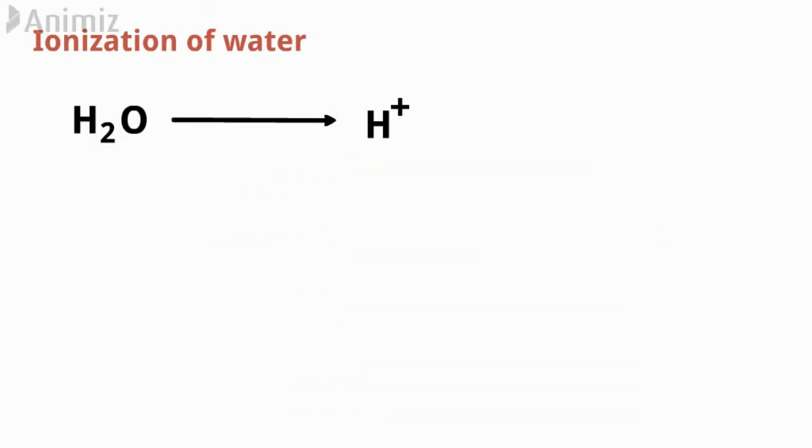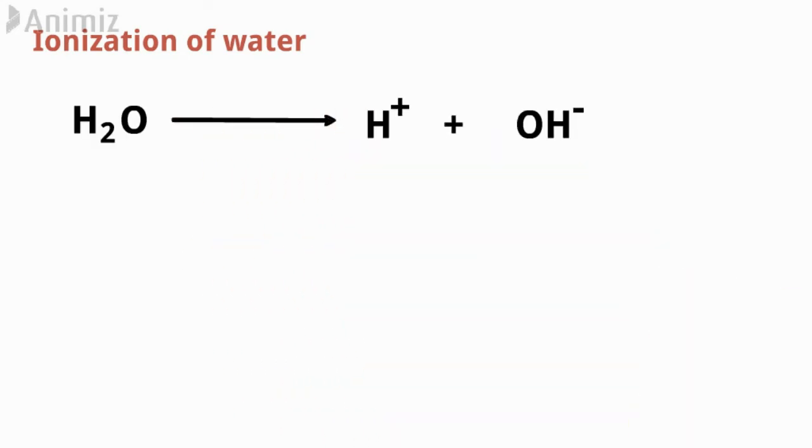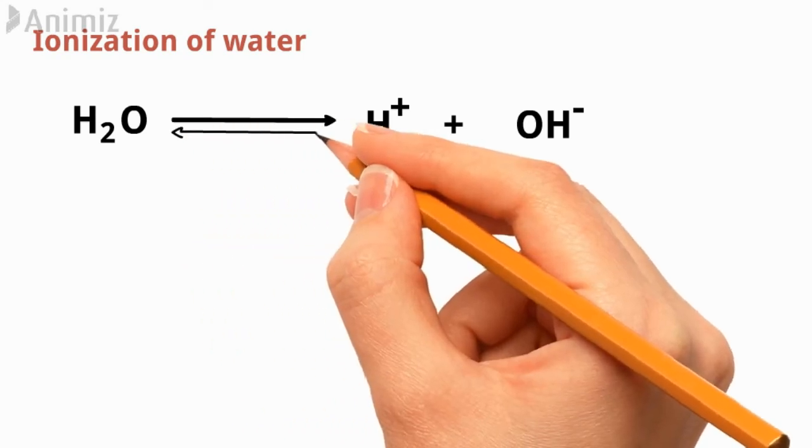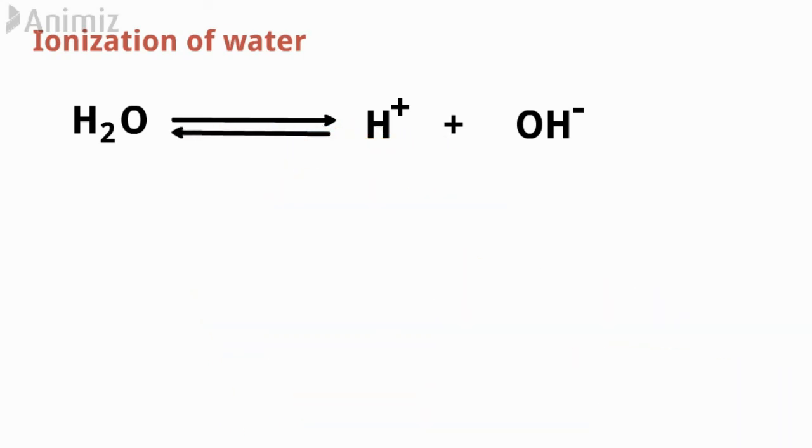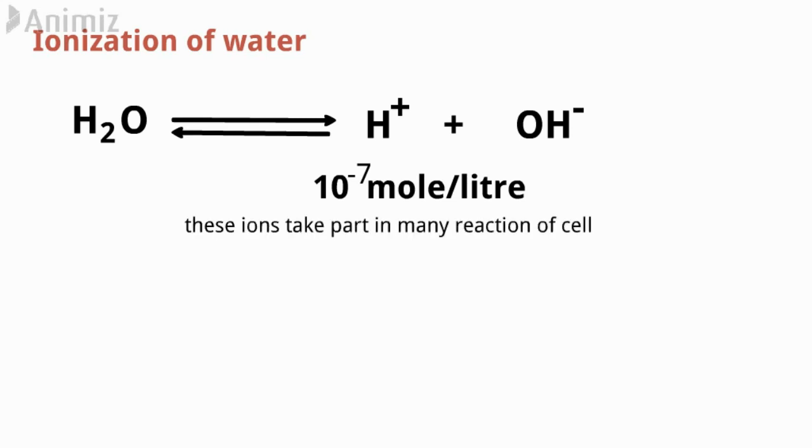Ionization of water: The water molecule ionizes to form hydroxyl ion and hydrogen ion. This reaction is reversible, but an equilibrium is maintained. At 25 degrees Celsius, the concentration of each hydroxyl and hydrogen ion in pure water is about 10^-7 mol per liter. The hydrogen and hydroxyl ions affect and take part in many of the chemical reactions that occur in cells.